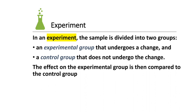In an experiment, the sample is divided into two groups: an experimental group and a control group. The control group is controlled, meaning we don't do anything to it — it doesn't undergo any type of change. The experimental group is something you're going to change — you're adding something or changing one or two dynamics. The effect on the experimental group is then compared to the control group to see what the difference is.